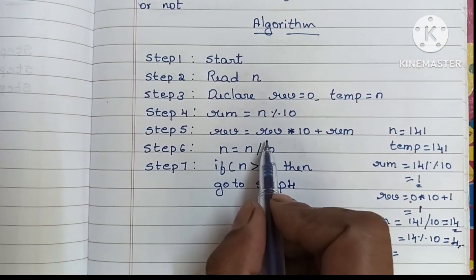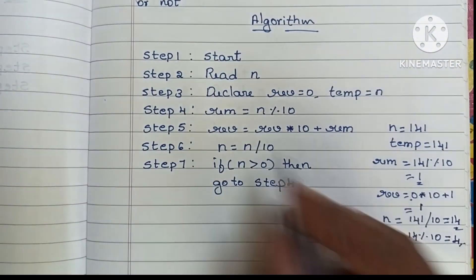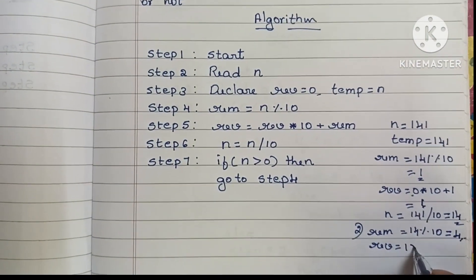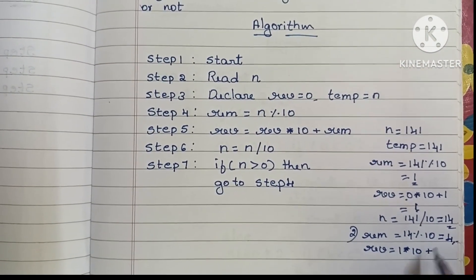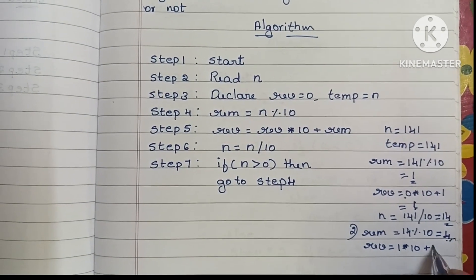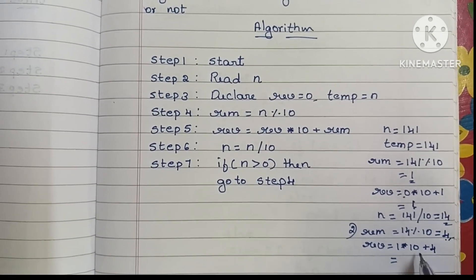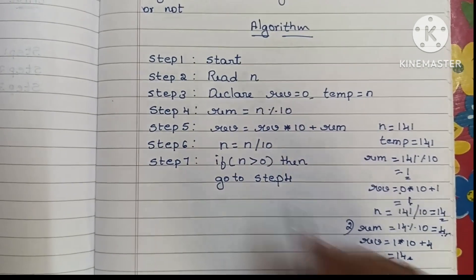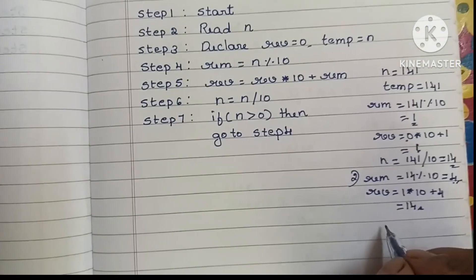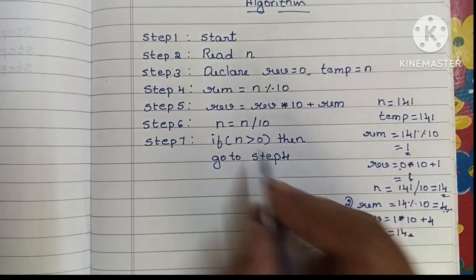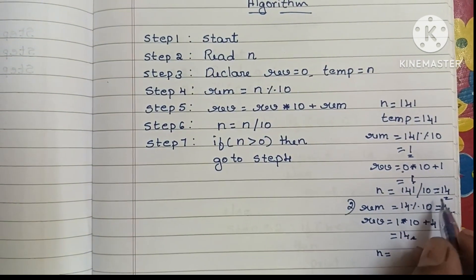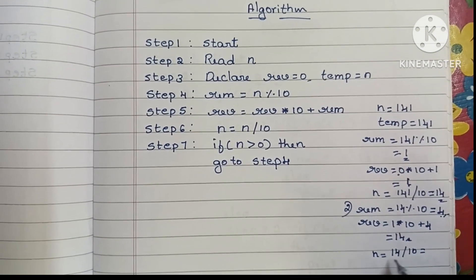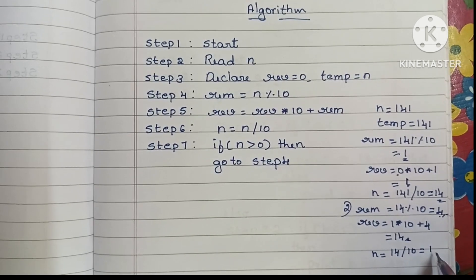Next find reverse: reverse = 1 into 10 plus 4, so reverse becomes 14. Then update n: n = 14 divided by 10, so n becomes 1.